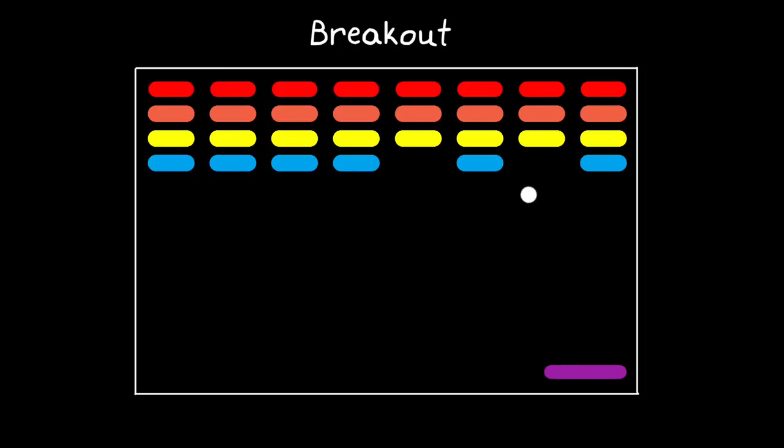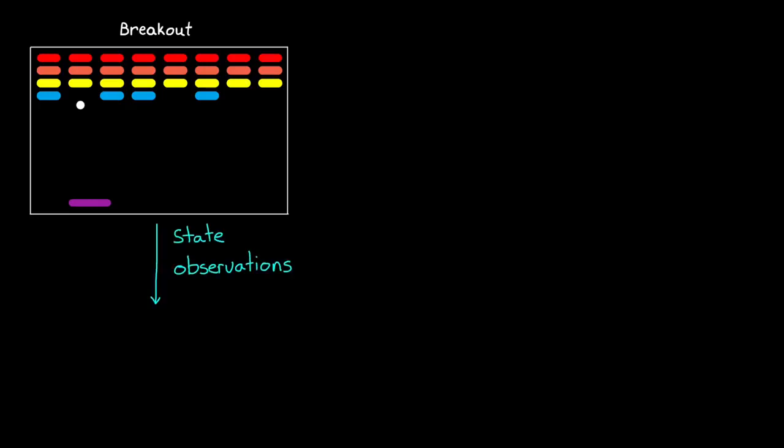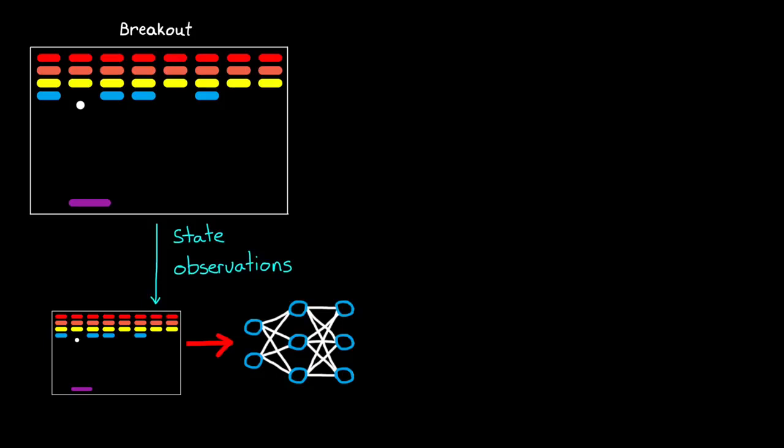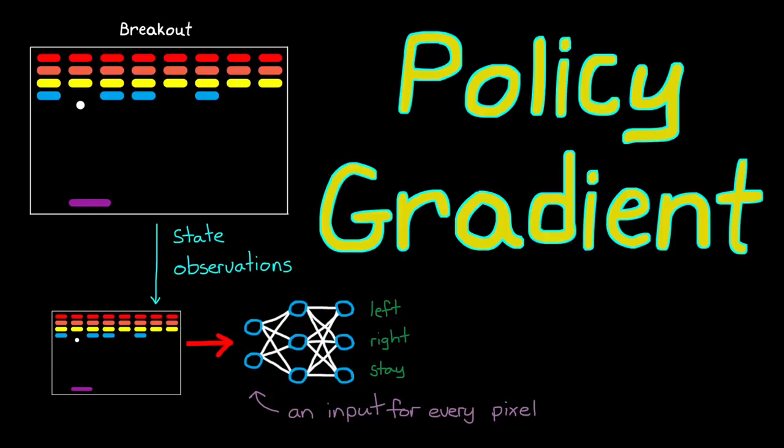And if you're not familiar, Breakout is this game where you're trying to eliminate bricks using a paddle to direct a bouncing ball. This game only has three actions: move the paddle left, right, or not at all. And a near continuous state space that includes the position of the paddle, the position and velocity of the ball, and the location of the remaining bricks. Now for this example, we'll say that the observation is a screen capture of the game feeding in one frame at a time, and therefore there's one input into our neural net for every pixel.